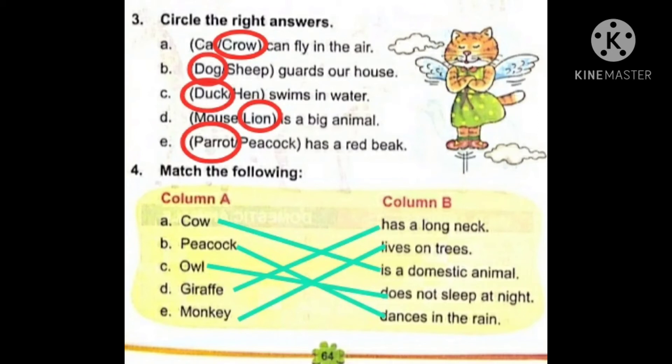Number D: mouse or lion — which is a big animal? We all know lion is a big animal, so we will encircle lion here. Number E: parrot or peacock has a red beak. Kaun si bird hai jinki red beak hoti hai? Parrot has a red beak — tote ka jo beak hoti hai woh red color ki hoti hai. So we will encircle parrot here.